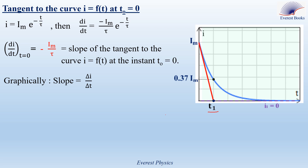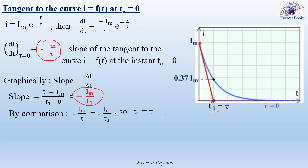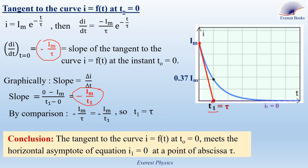The slope can also be determined graphically as Δi/Δt. Taking two points — the first with abscissa t₁ and ordinate 0, and the second with abscissa 0 and ordinate Im — the slope equals (0 − Im)/(t₁ − 0) = −Im/t₁. Setting the two slope expressions equal: −Im/τ = −Im/t₁, so t₁ = τ. Therefore, the tangent to the curve i = f(t) at t₀ = 0 meets the horizontal asymptote i = 0 at a point of abscissa τ.